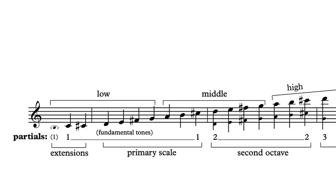These nuanced, balanced qualities come at a price. The flute's middle register is only a little bit stronger than its low register, at least up to around D5 where the second partial overblowing starts. So make sure that your accompanying textures are fairly light when highlighting this register.